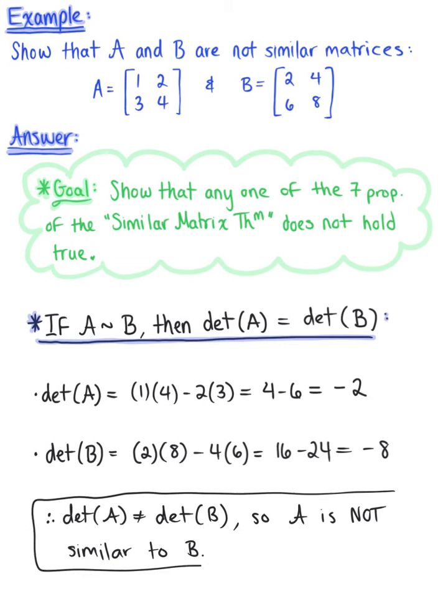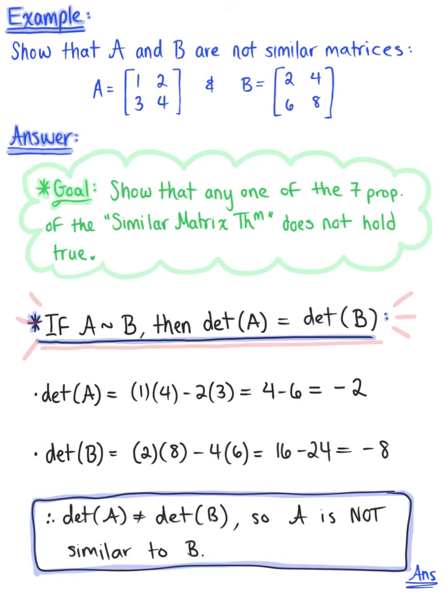And so this is our final answer. Now, one final thought on this example. I want you to note that this is not necessarily an exclusive solution to show that matrix A is not similar to matrix B. Here, I used property one saying that if these two matrices are similar, then their determinants should be equivalent. But there are six other properties in the similar matrix theorem that we could have used. So I encourage you to play around with these different properties when you're exploring these examples.